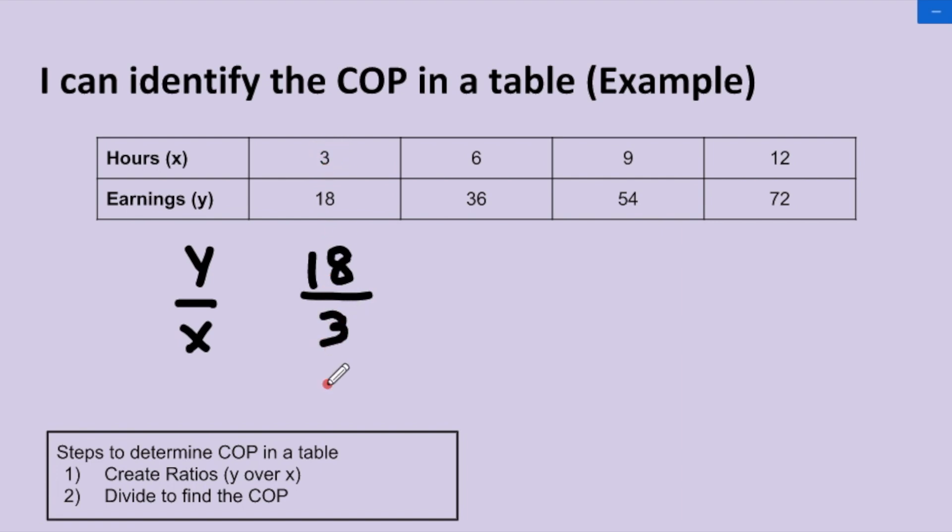So we'd make the fraction 18 over 3. For the second column, the y value is 36 and the x value is 6. So our fraction or ratio would be 36 over 6. In the third column, my y value is 54 and my x value is 9. So we'd have the ratio 54 over 9. And in the final column, my y value is 72 and my x value is 12.